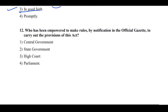Question: Who has been empowered to make rules by notification in the official Gazette to carry out the provisions of this Act? Simple answer: Central Government — Section No. 10. So if you want to attempt direct questions, click on the link below. Thank you. Happy learning. All the best.